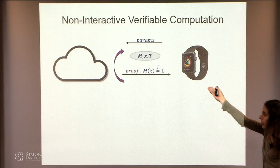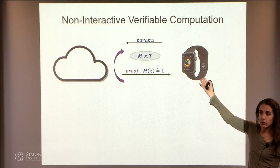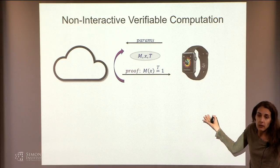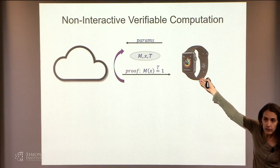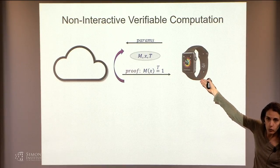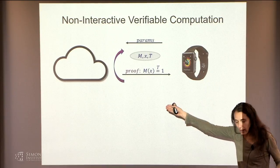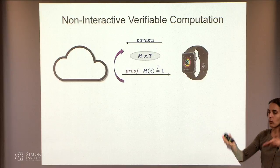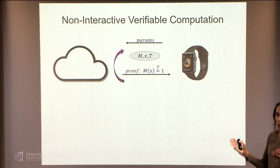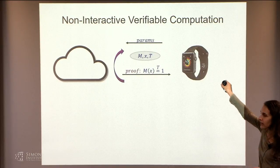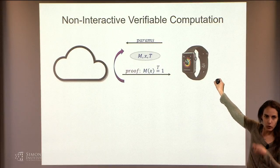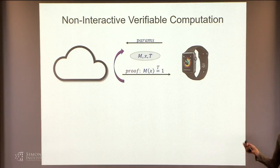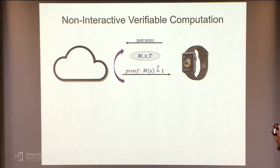For any computation — a Turing machine M on input X that outputs one after time T — the cloud can give a certificate, like a mathematical proof written on a piece of paper. It gives a short proof that Turing machine M on input X outputs one within T time steps. You can do that over and over again. The weak device can get proofs for any computation and verify them very efficiently.